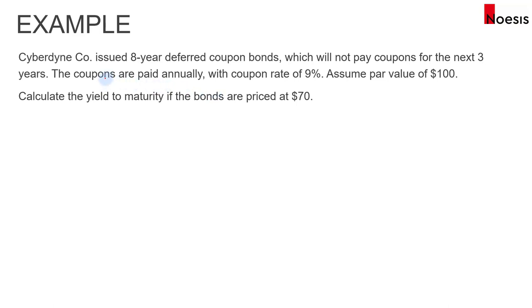In this example, Cyberdyne Co. issued 8-year deferred coupon bonds, which will not pay any coupons for the next 3 years. The coupons will be paid annually with a coupon rate of 9%. We'll assume the par value is $100, and the bonds are currently priced at $70 per 100 par.